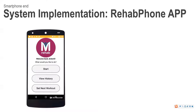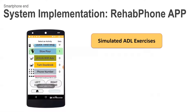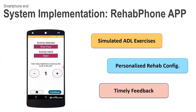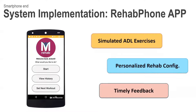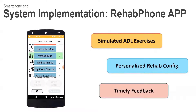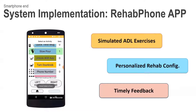Now let's look at our implementation of Rehabphone. First is the software part. We developed a mobile app to turn the in-home rehabilitation into a more interactive and informative experience. The app has a neat UI that can guide the user through the rehab process. It contains a list of daily activities and lets users select their rehab preferences, such as intensity. Afterward, we leverage the onboard sensors to track motion and provide timely feedback.